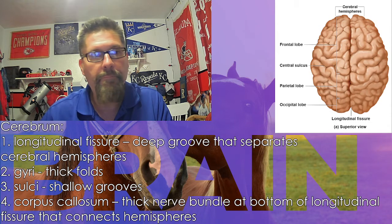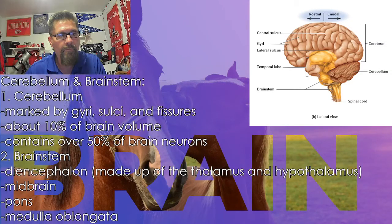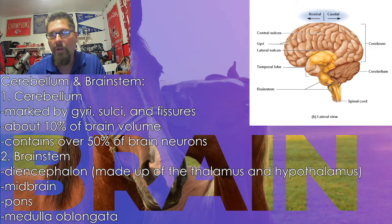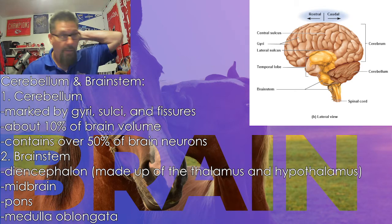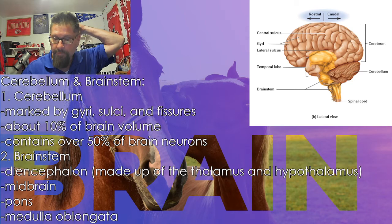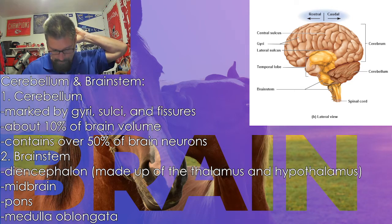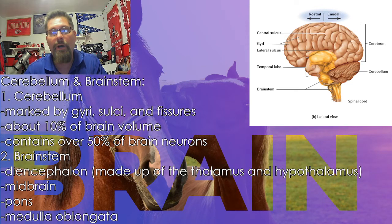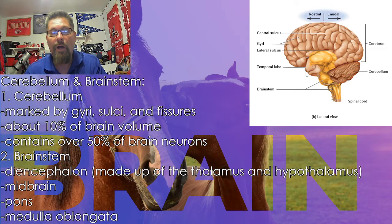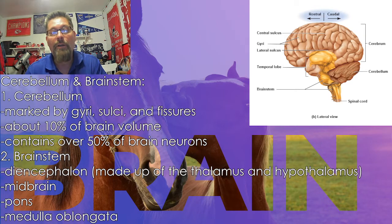Looking at the cerebellum and brain stem, you can see in the diagram those are the lower sections. The cerebellum sits right at the back of the head — you can almost feel that knob at the very back. The cerebellum handles a large portion of the mental processes your brain uses to get your body to do what it needs to do.